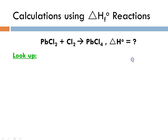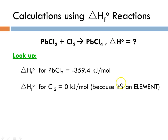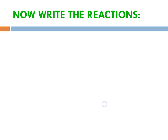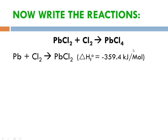We have to look up the delta H of formation for lead(II) chloride, which is −359.4 kilojoules per mole. The delta H of formation for chlorine is going to be zero because it's an element — the universe made it for us. The delta H of formation for lead(IV) chloride is −329.2 kilojoules per mole. We don't have to form chlorine; the universe did it for us.